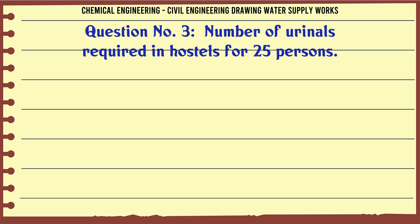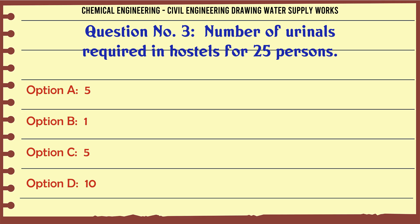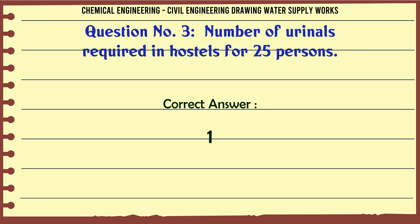Number of urinals required in hostels for 25 persons? A. 5, B. 1, C. 5, D. 10. The correct answer is 1.